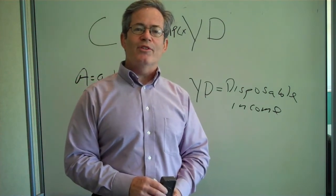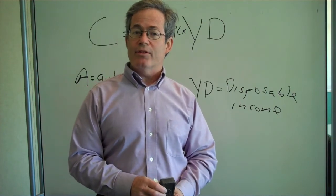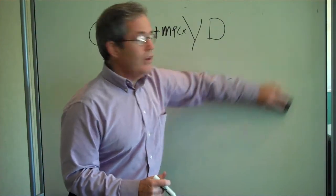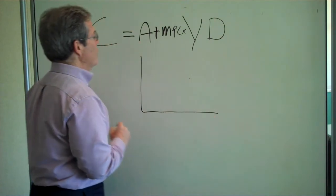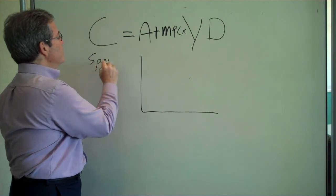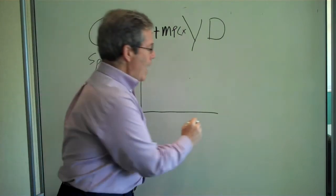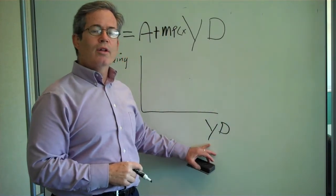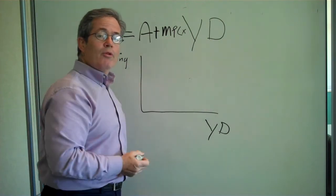Now the next thing we want to do is put this on a graph. So I'm going to show you how we can graph this relationship. We're going to be using a lot of these graphs in developing our income expenditure model. So we're going to put spending up here and disposable income on the horizontal axis.